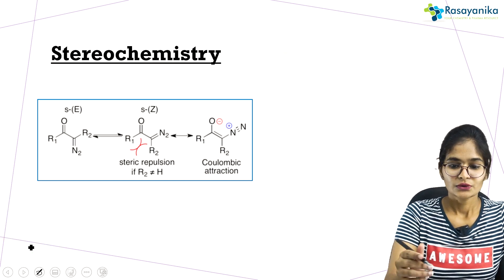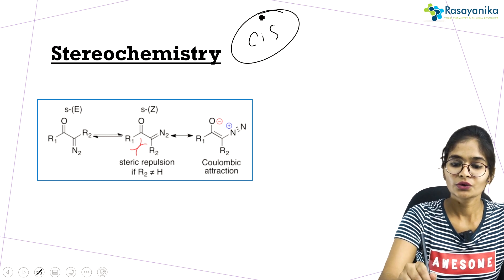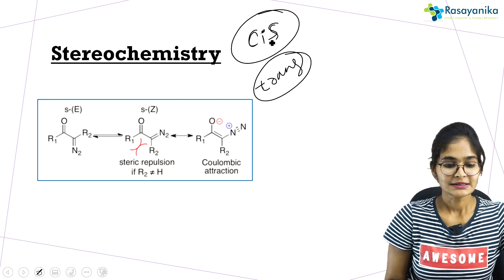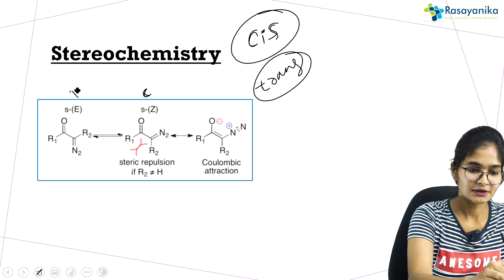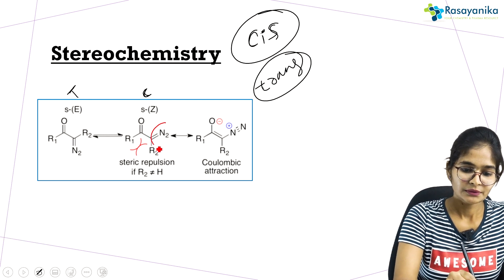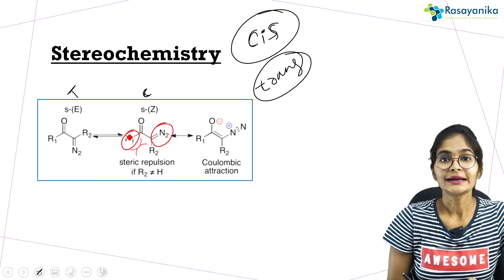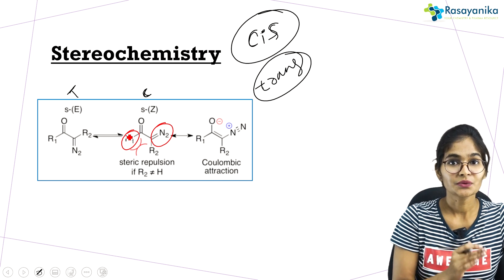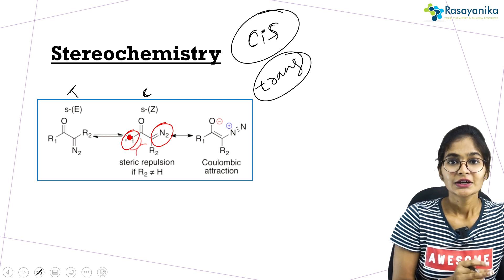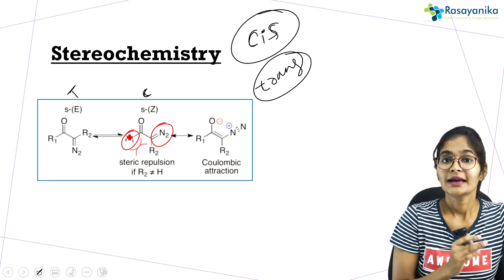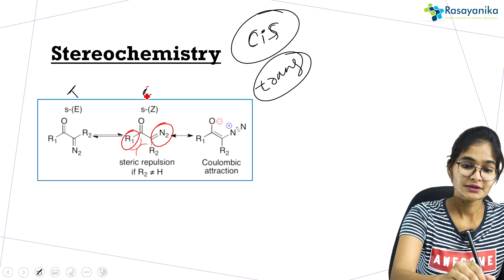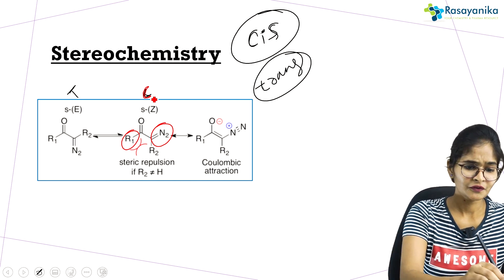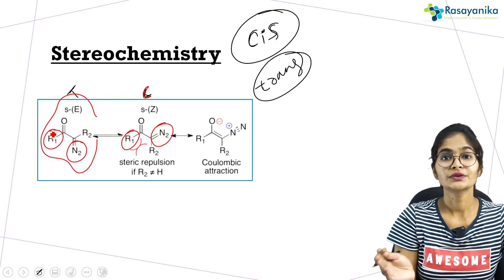The cis conformation is mainly preferred over the trans conformation. In the cis conformation, the leaving group and the migrating group are both anti-periplanar to each other. When they are anti-periplanar in the cis conformation, the compound readily kicks out N₂ gas and the R₁ migratory group attacks the electron-deficient carbon center. This is possible in a single-step mechanism, which is why the cis conformation undergoes the concerted step mechanism.